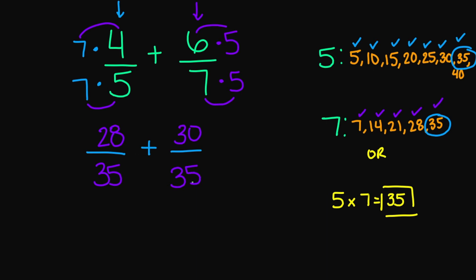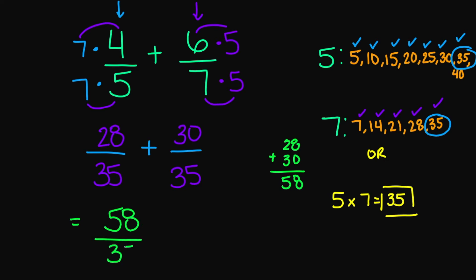Now that my denominators are the same, I'm going to add my numerators. 28 plus 30 is going to give us 58. So my numerator is 58 and my denominator is 35. But we have an improper fraction — remember, an improper fraction is when your numerator on top is larger than your denominator. My 58 is larger than my 35.